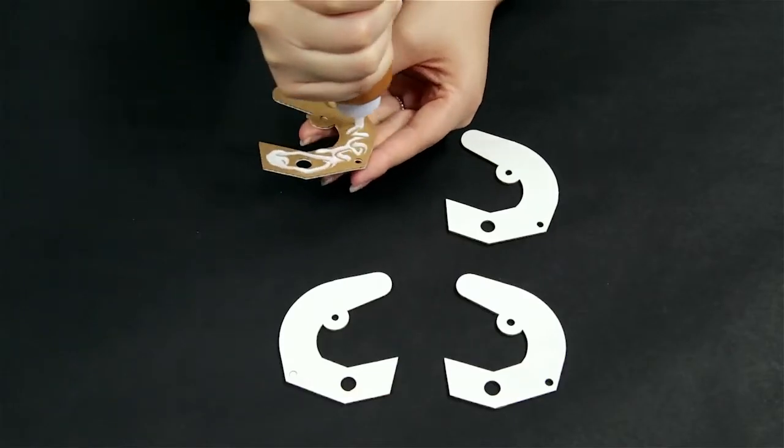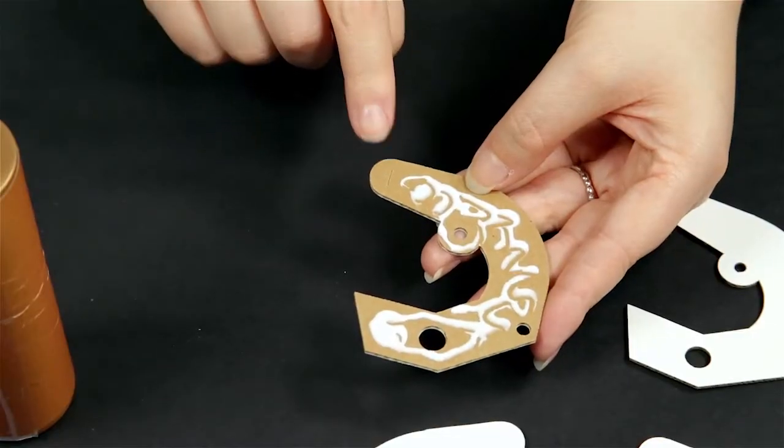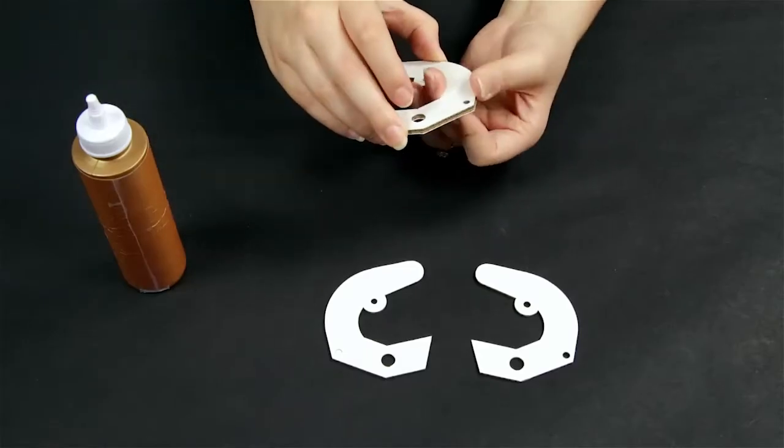Step 2: Glue one part F1 into one part F2. Avoid glue at the fingertips. Then repeat.